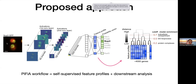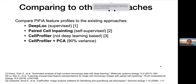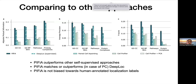We can extract single-cell feature profiles from individual images, or construct an average feature profile by taking all images belonging to a particular protein and averaging their feature profiles. Before diving into downstream analysis, I want to show how PFIA feature profiles compare to existing approaches — namely supervised DeepLoc, self-supervised paired cell inpainting, and CellProfiler. We compared them across four functional standards, ranging from GO cellular component to the detailed protein complex standard. PFIA features outperform other self-supervised approaches, containing more functional information across different scales of functional organization.